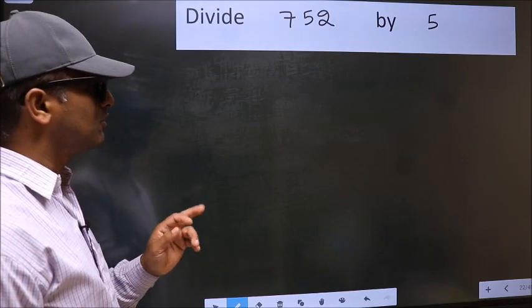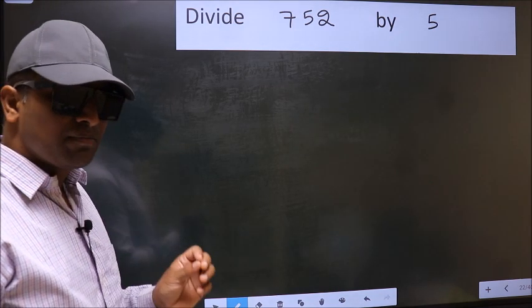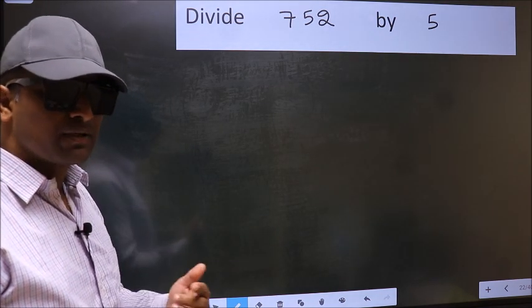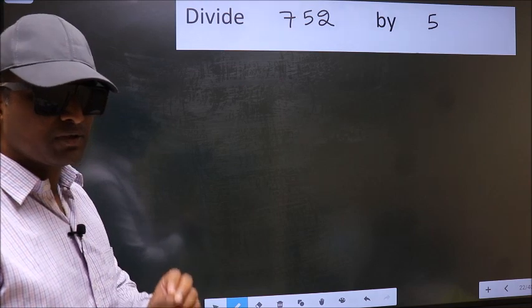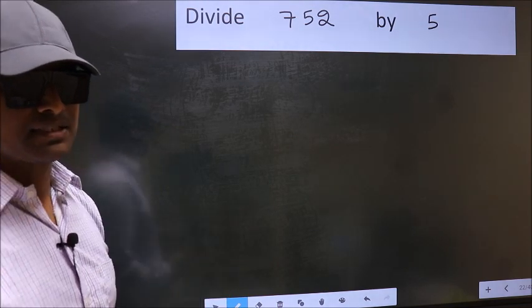Divide 752 by 5. While doing this division, many do this mistake. What is the mistake that they do? I will let you know. But before that, we should frame it in this way.